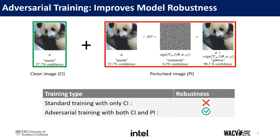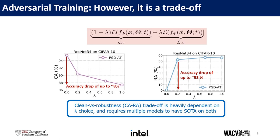Adversarial robustness of a DNN model is measured as the performance of the model on various maliciously crafted images. To achieve robustness against such perturbations, a model should be trained on both clean and perturbed images. We generally select PGD gradient-based perturbation to generate the malicious images during training. However, traditional adversarial training provides a trade-off between clean and robust accuracy that is often controlled by the training loss hyperparameter lambda. For example, an adversarially robust model suffers from a clean accuracy drop of around 8% evaluated on CIFAR-10.